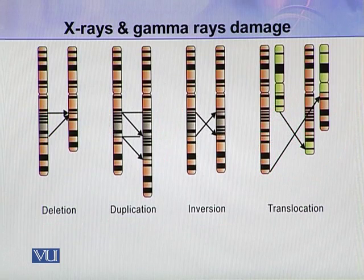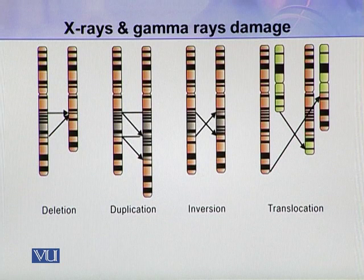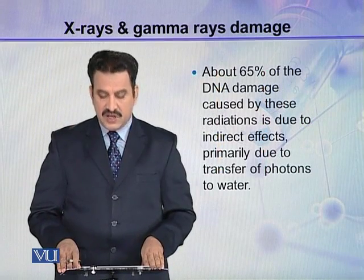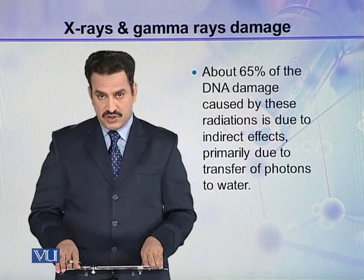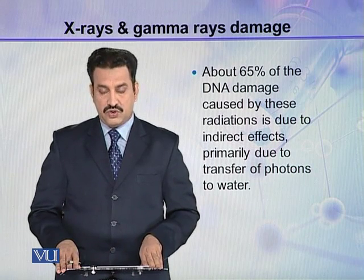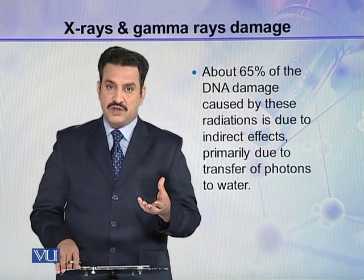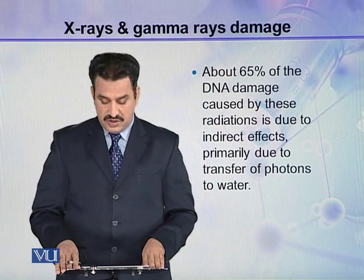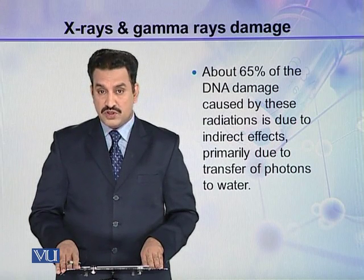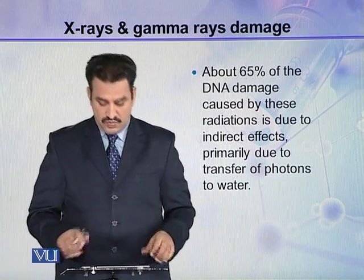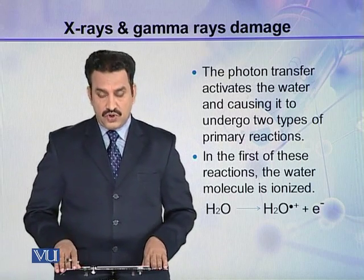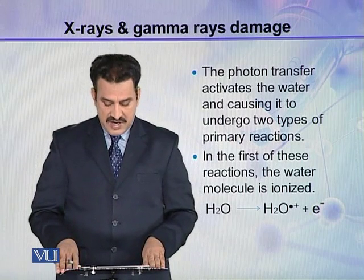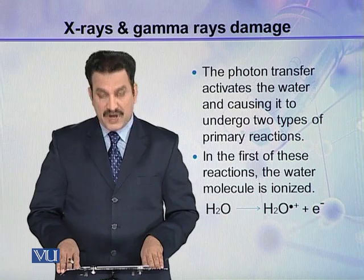About 65% of the DNA damage caused by these radiations is due to indirect effects. That is primarily due to the transfer of photons from light to water molecules. This photon transfer activates the water, causing it to undergo two types of primary reactions.